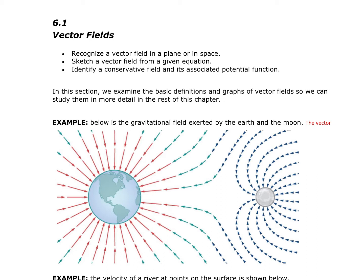In this example we have a gravitational field exerted by the earth and the moon. The vector associated with a point gives the net gravitational force exerted by two objects on the same unit of mass. The vectors of largest magnitude are the ones closest to the object. The larger object — the earth compared to the moon — has greater mass, so it exerts a greater gravitational force in magnitude than the smaller object.